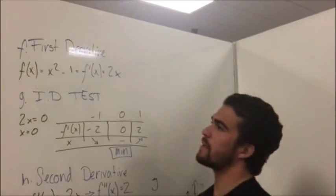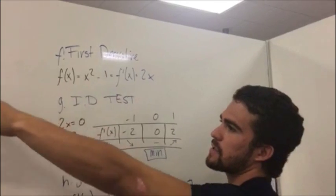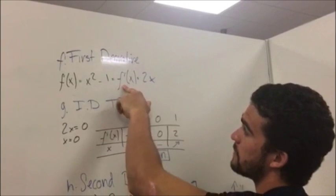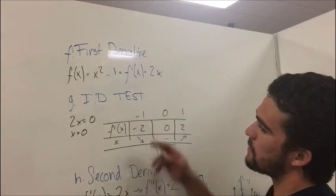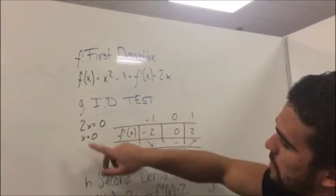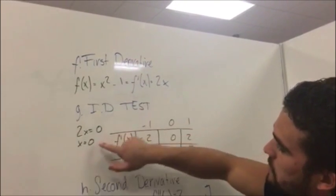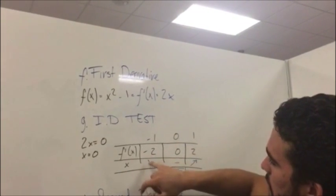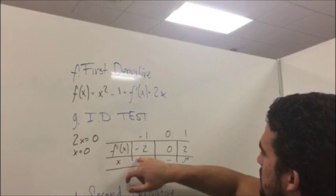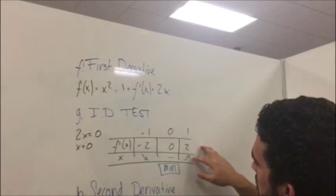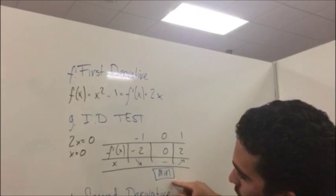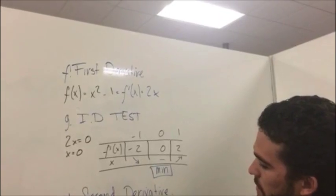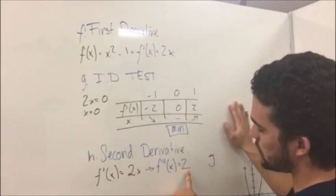For point f, we find the first derivative using our simplified equation. The first derivative f prime of x equals 2x. For the ID test, we set 2x equal to zero. Substituting values from the left gives a negative result, so the function is decreasing, and from the right it is positive, so increasing — giving us a minimum point. For point h, the second derivative of 2x is 2.